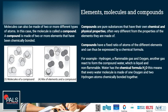We can see in number three we have two different types of atoms bonded together, indicated by the different colors. Compounds are pure substances that have their own chemical and physical properties, often very different from the properties of the elements they are made of. Compounds have a fixed ratio of atoms of the different elements and can thus be expressed by a chemical formula. There is another lesson that goes into detail on what chemical formulas are and how to construct them.